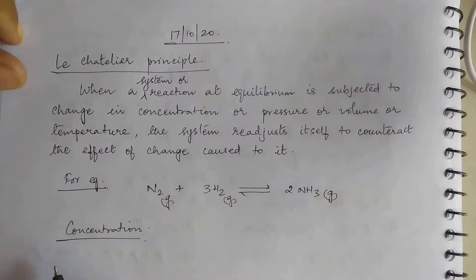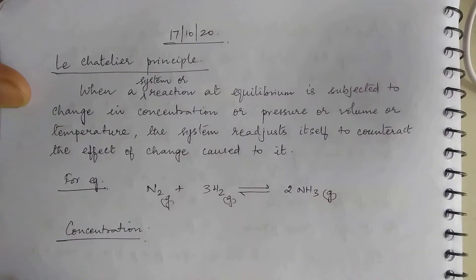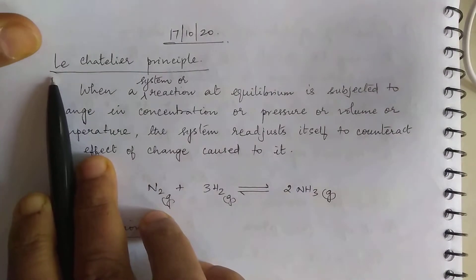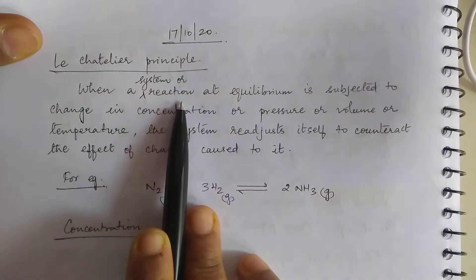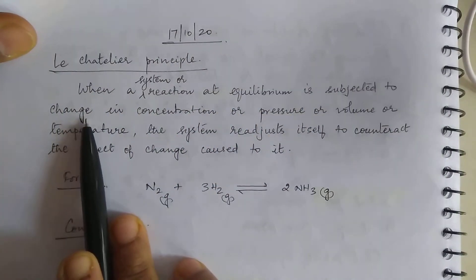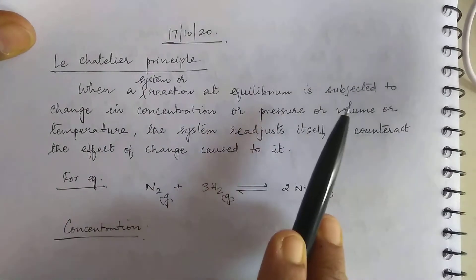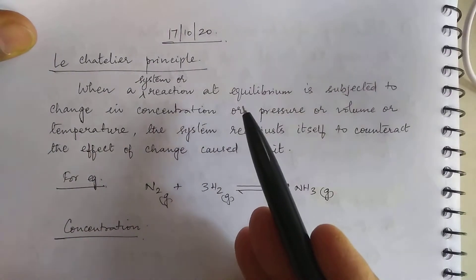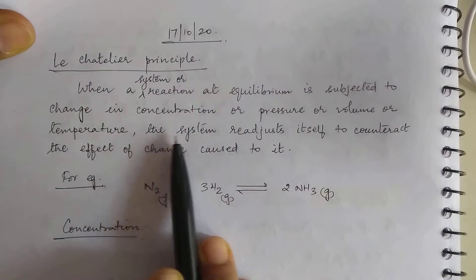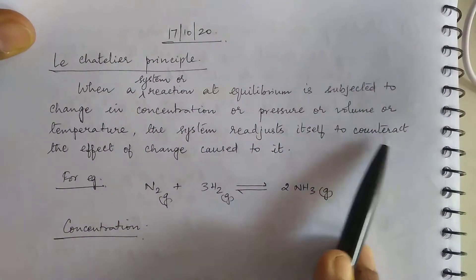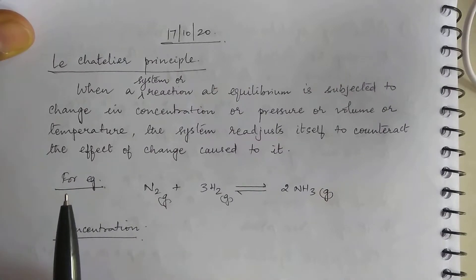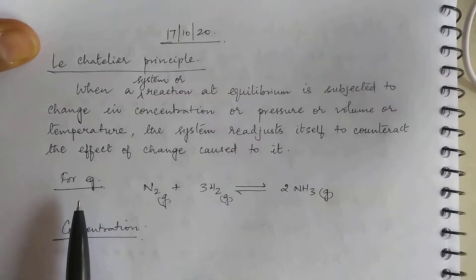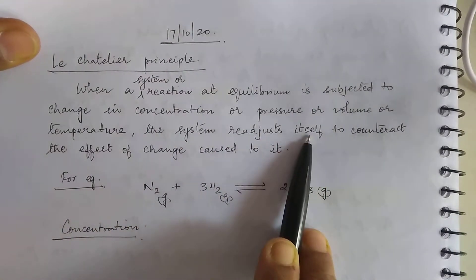This is a very important topic — Le Chatelier's Principle. When a system or reaction at equilibrium is subjected to change, either in terms of concentration, pressure, volume, or temperature, or when some inert gas is added, the system readjusts itself to counteract the effect of that change. You have to learn the principle precisely: the system readjusts itself to counteract the effect of change caused to it.